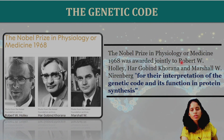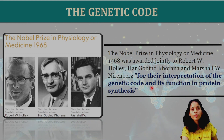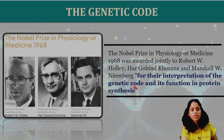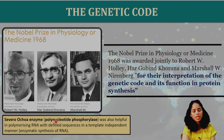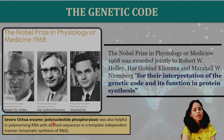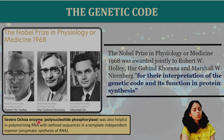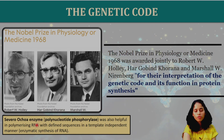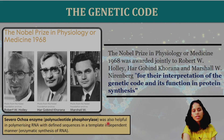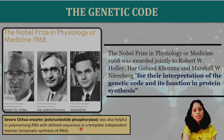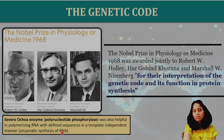The Nobel Prize in Physiology or Medicine in 1968 was awarded jointly to Robert W. Holley, Har Gobind Khorana, and Marshall W. Nirenberg for their interpretation of the genetic code and its function in protein synthesis. Severo Ochoa discovered the enzyme Polynucleotide Phosphorylase, which was helpful in polymerizing RNA with defined sequences in a template-independent manner — allowing the enzymatic synthesis of RNA.